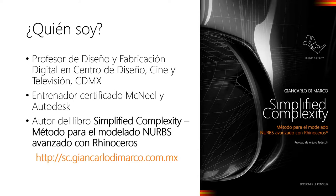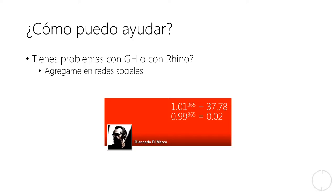Simplified Complexity es un método para el modelado de nubes avanzado por Rhinoceros. Se puede encontrar el libro en el sitio web sc.jancarodimarco.com.mx y cuentamos con envío en toda la república. Estoy disponible para ayudar a los que tienen dudas o problemas con Rhino; me pueden buscar y agregar en redes sociales para los que necesiten una capacitación más profunda.